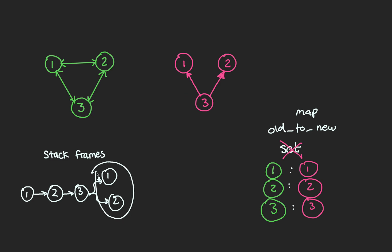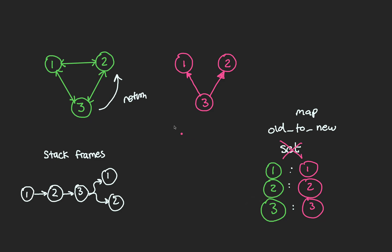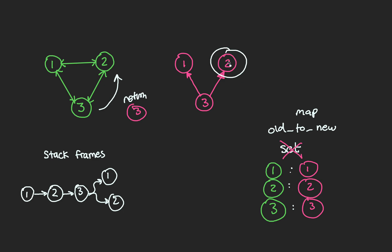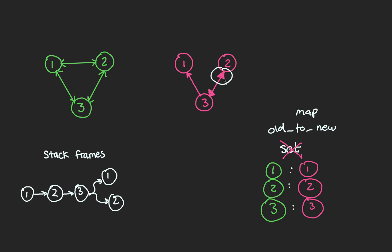Here we'll look up old node 3 in our map to access new node 3, and with these two references there's nothing stopping us from setting new node 2 as a neighbor of new node 3. We've only set edges one way though, not the other way around — we'll handle that shortly. We've traversed all of old node 3's neighbors, so we backtrack and return. Our function return type returns a node — not void. We look up old node 3 in our map to access new node 3 and return that. In summary: on the backtrack from a single neighbor, we set an edge going one way; on the backtrack from all neighbors, we set an edge going the other way.